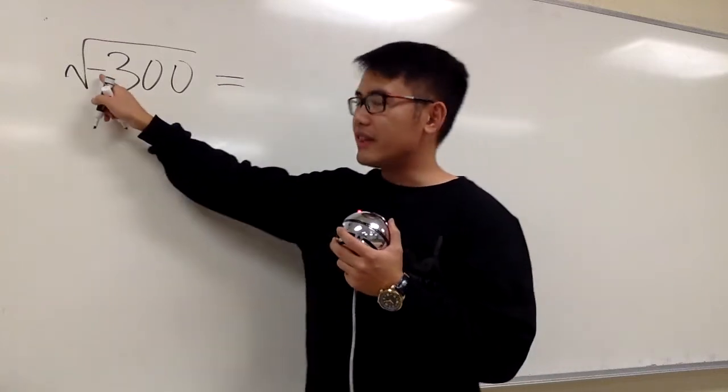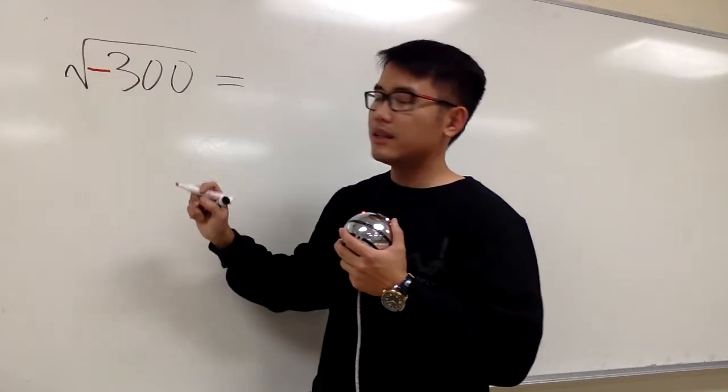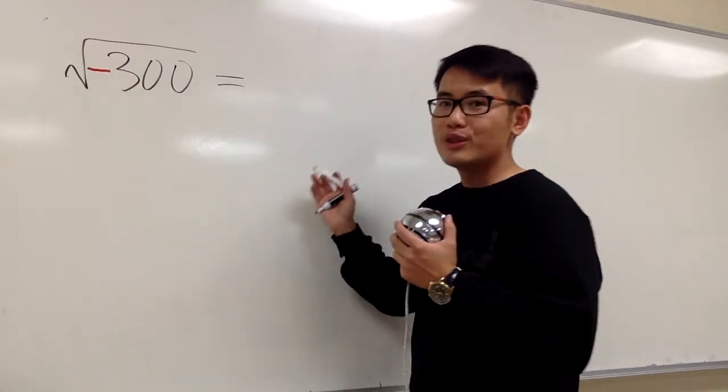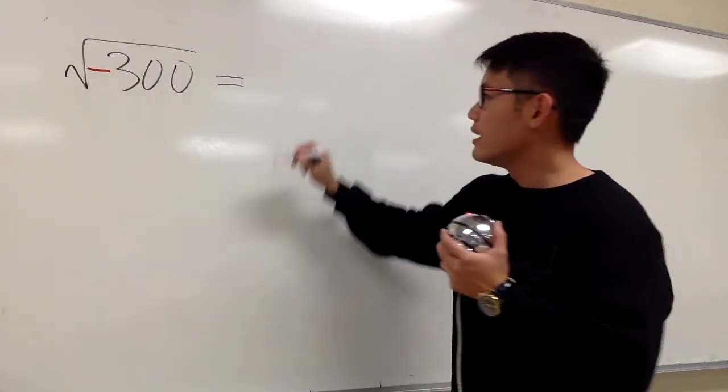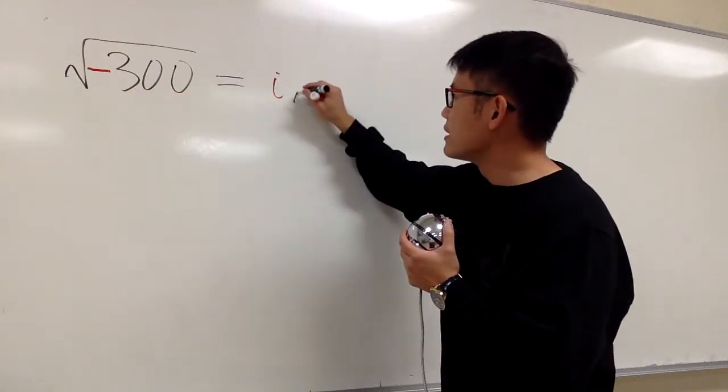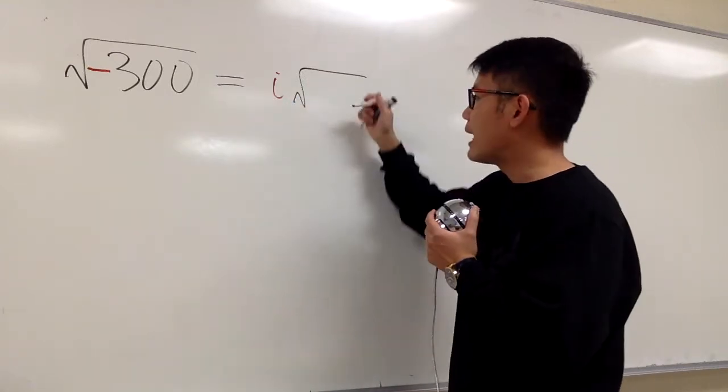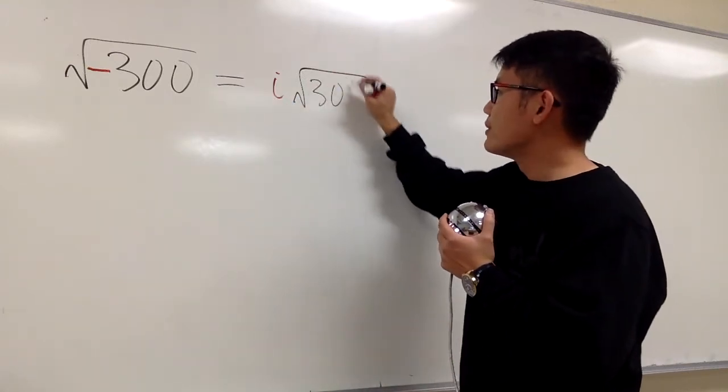Whenever we have a negative inside of the square root, let me just focus on this negative inside. What we're going to do is we're just going to take out an i. So this is equivalently i times the square root, and now once I take out the i, inside we just have the positive 300.